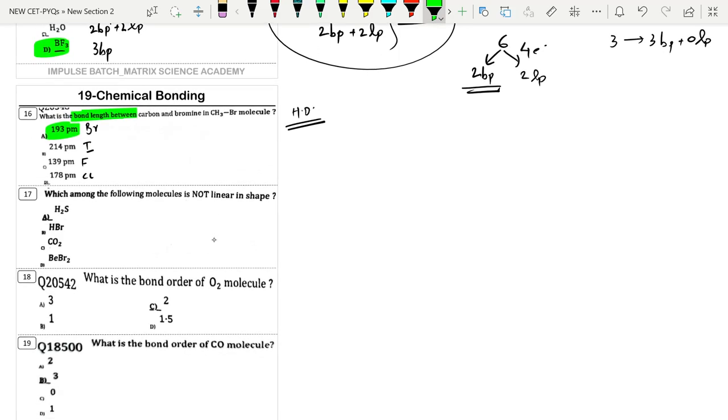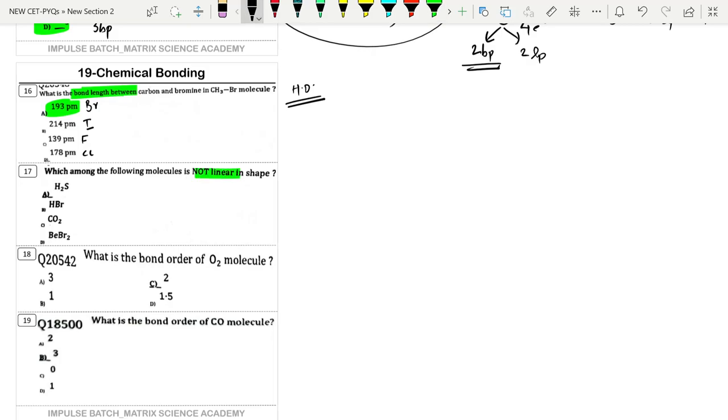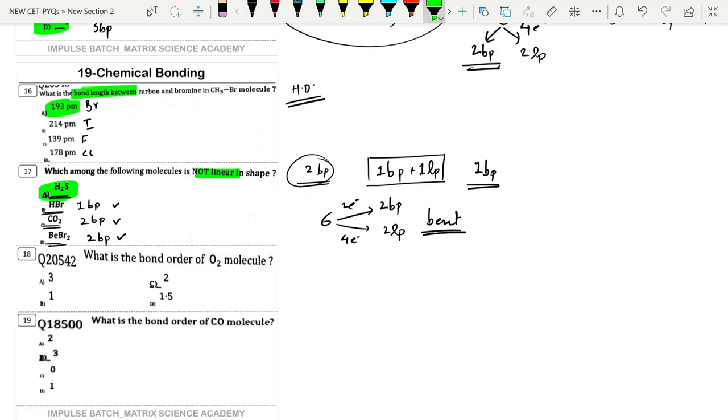Which among the following molecule is not linear? Linear condition is two bond pairs, or even one bond pair plus one lone pair, or even one bond pair. Comparing: HBr is only one bond, CO2 has two bond pairs, BBr2 has two bond pairs - all are linear. H2S has sulfur with 6 electrons: two electrons used for hydrogen bonds forming two bond pairs, and remaining 4 electrons form two lone pairs. This gives bent shape, so it's not linear. Option A is correct.